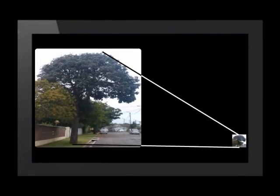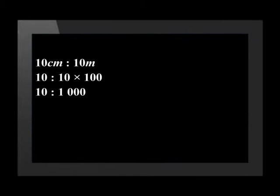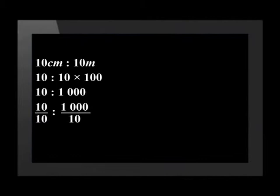Let's write the relationship between the drawing and the tree in a ratio. The drawing is 10 centimeters and the tree is 10 meters. We now need to write both measurements in the same units. There are 100 centimeters in 1 meter, which makes the ratio 10 to 1000. Now we need to simplify the ratio as far as possible. We do this by dividing both numbers by 10, which gives a simplified ratio of 1 to 100.